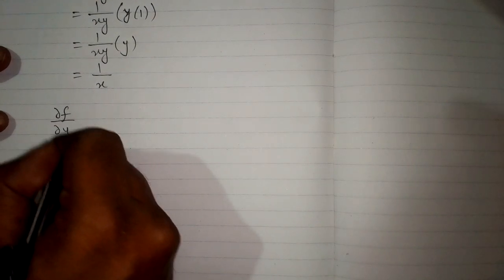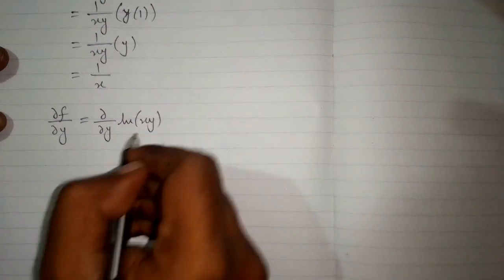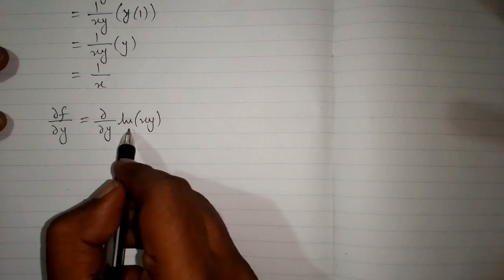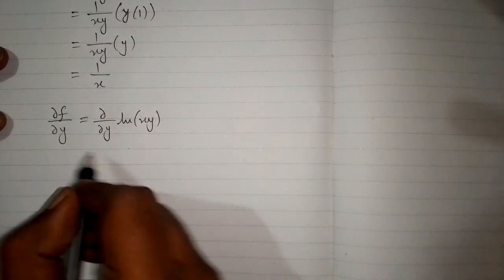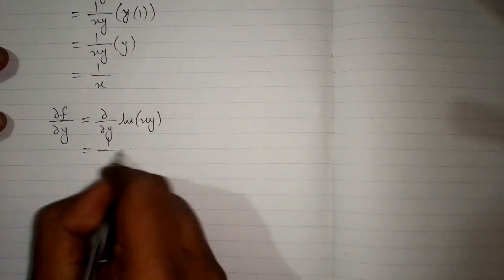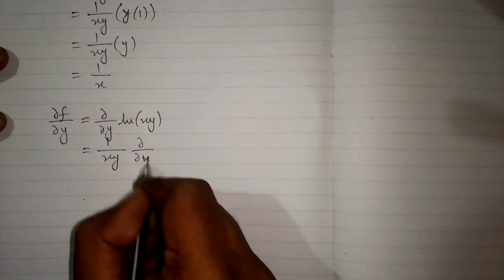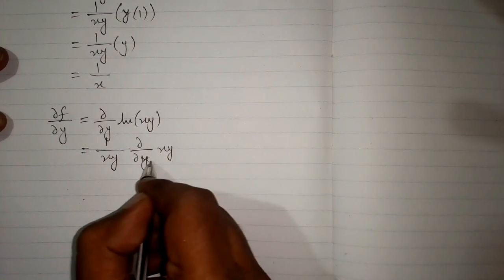Now we will take the partial derivative of the same function with respect to y. We will take the partial derivative of x with respect to y. So the derivative of ln is 1 upon xy multiplied by the partial derivative of xy with respect to y.